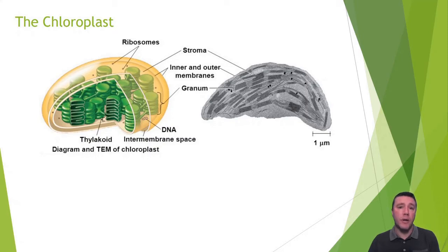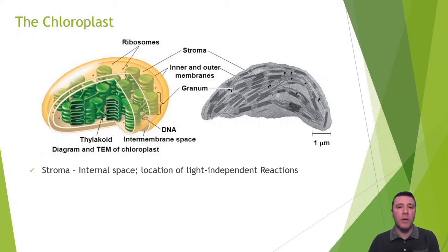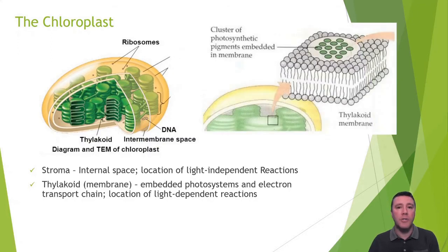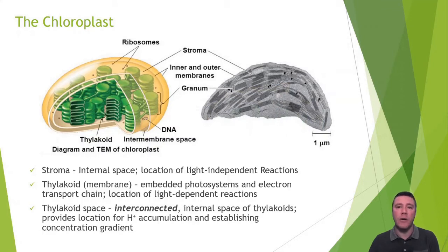Although we've observed the structure of the chloroplast in a previous unit, let's review it. The chloroplast is a double-membrane organelle containing its own DNA and ribosomes, allowing it to manufacture its own proteins. The large internal space within the chloroplast is called the stroma, and it is the location of the Calvin cycle. Thylakoids are membrane-bound structures that are stacked on top of one another and possess photosystems, which are clusters of photosynthetic pigments embedded in the thylakoid membrane. Recall that pigments like chlorophyll have hydrophobic tails that anchor them into the thylakoid membrane. The thylakoid space is the area inside the thylakoids and is interconnected with all of the other thylakoids in the chloroplast.